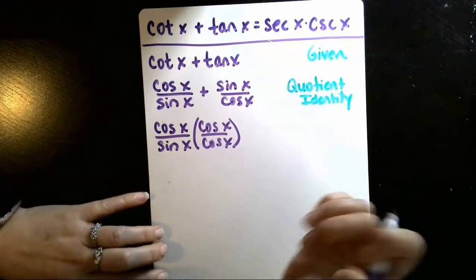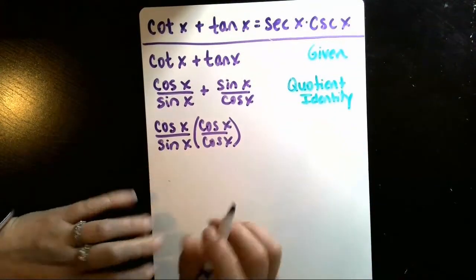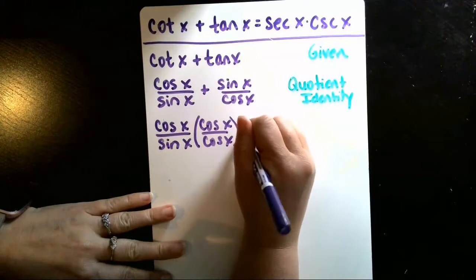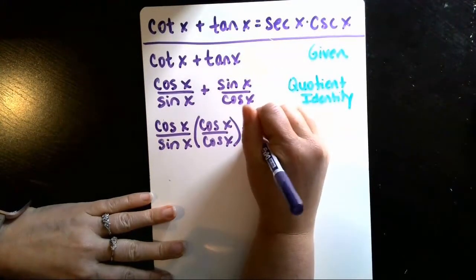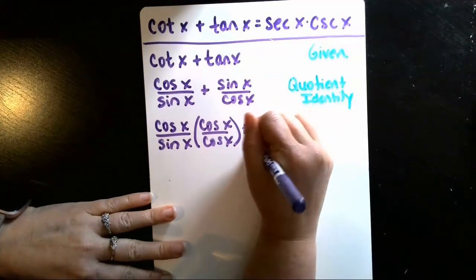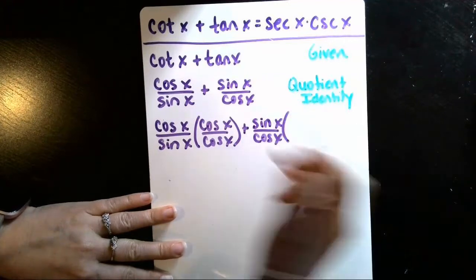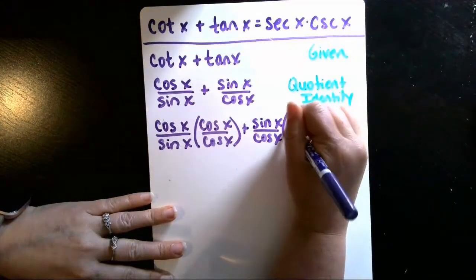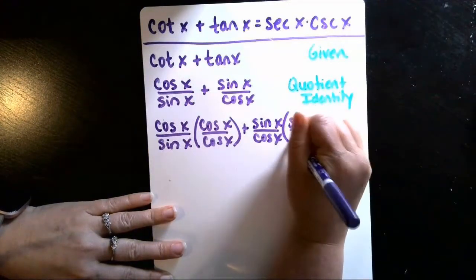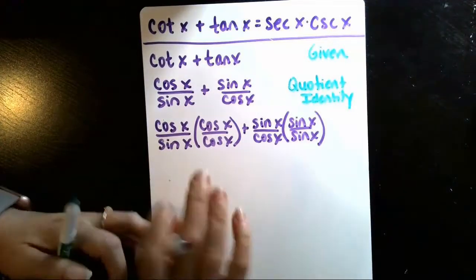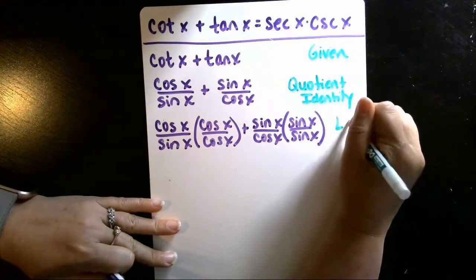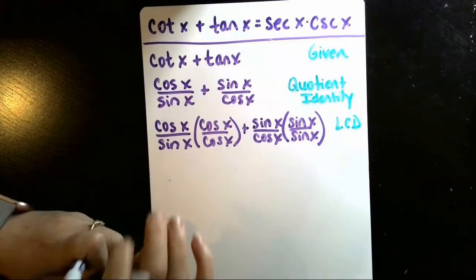Then I'm going to do the same thing to the second fraction, so I have sine of x over cosine of x. I'm going to multiply that by my other denominator, sine of x over sine of x. That was finding a least common denominator, LCD.